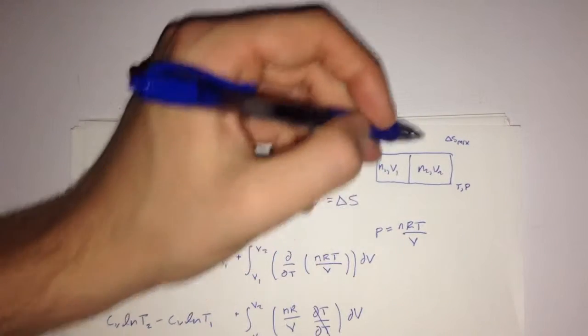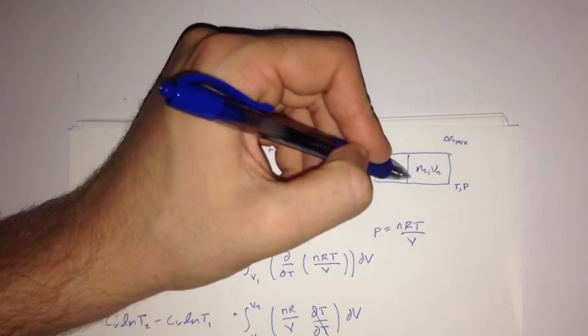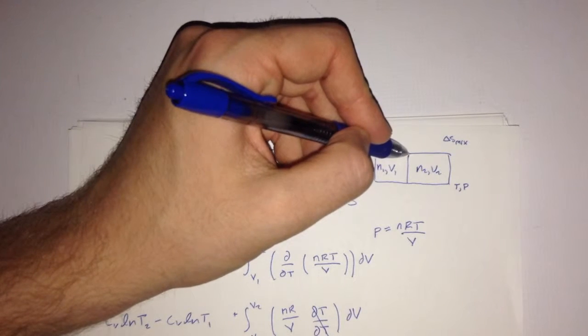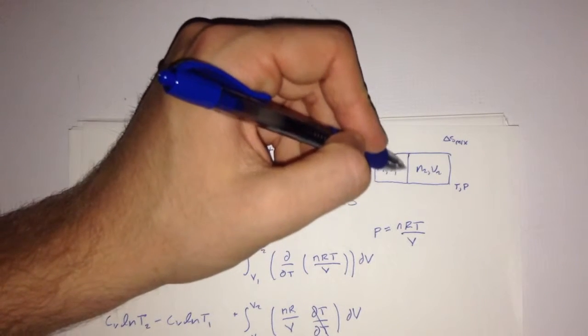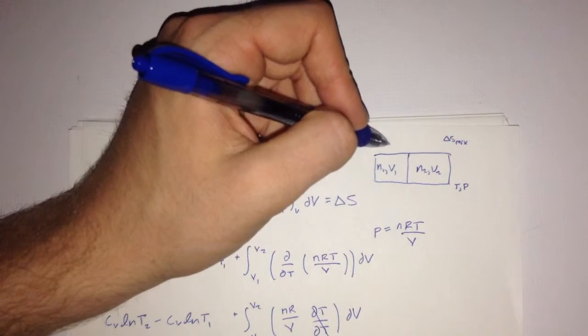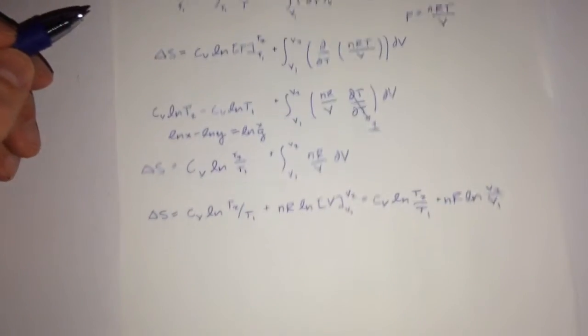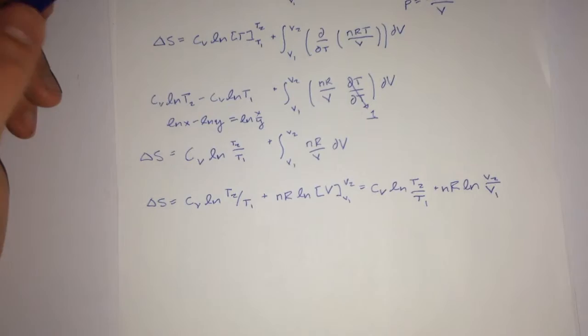So now let's solve for our original question, where we had two gases in separate containers, separate parts of the same container with a partition in the middle. We're going to remove the partition so the gases can mix.